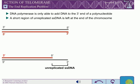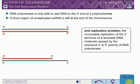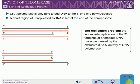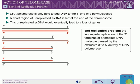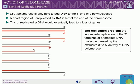This incomplete replication is called the end replication problem. If eukaryotes did not have a way to solve this problem, the linear chromosomes would become shorter after each round of replication, leading to loss of genes at the ends of chromosomes.